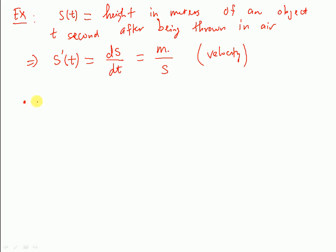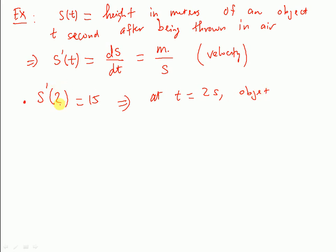Now, what if s prime of 2 equals 15? What does this represent? We know that s prime is the derivative function — the velocity. At the time t equals 2 seconds, the velocity is 15, which means the object is moving up at 15 meters per second.